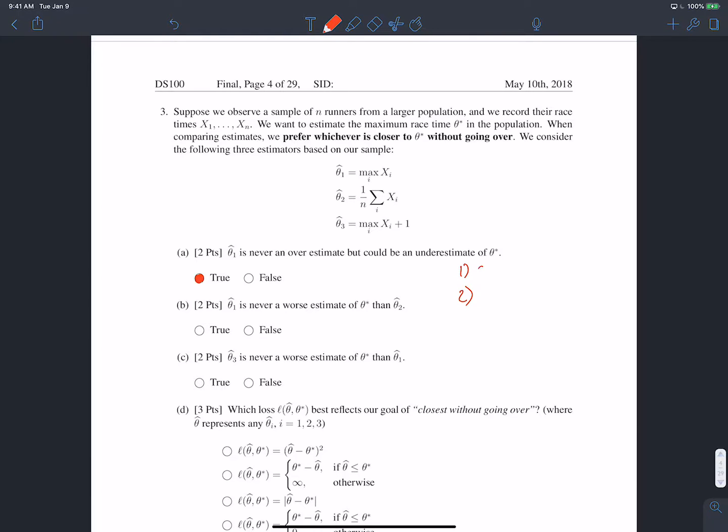Case one is that our sample contains the slowest person. So either our sample contains the slowest person, or it doesn't. In the case that our sample contains the slowest person, our estimate theta 1 hat will be equal to theta star. In the case that our sample does not contain the slowest person, our estimate theta 1 hat will be less than theta star. In both cases, theta 1 hat is never an overestimate, but could potentially be an underestimate of the true parameter. So that's why in this case it's true. Either a sample contains the true parameter, or it does not.